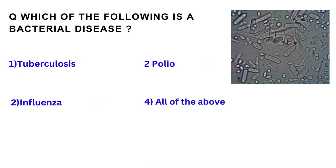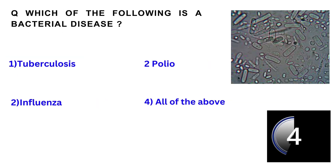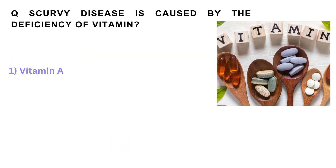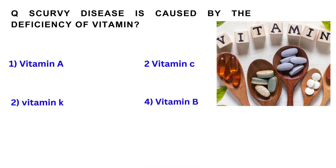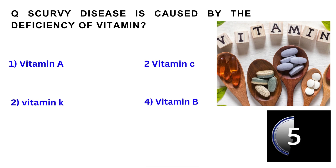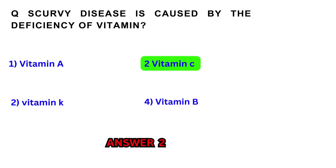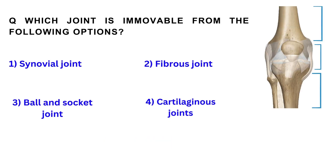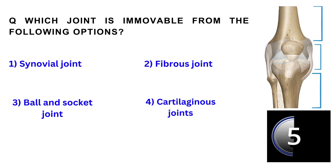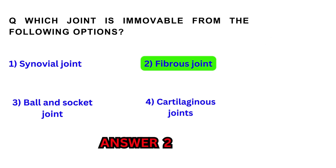Which of the following is a bacterial disease? Scurvy disease is caused by the deficiency of vitamin C. Which joint is immovable from the following options? Fibrous joint.